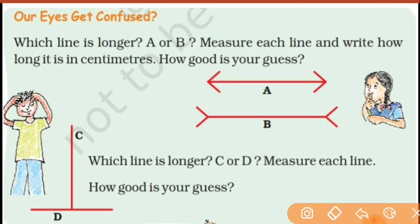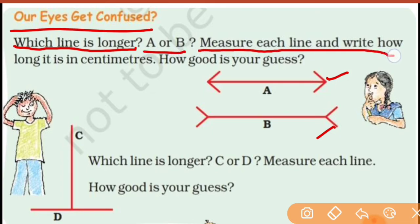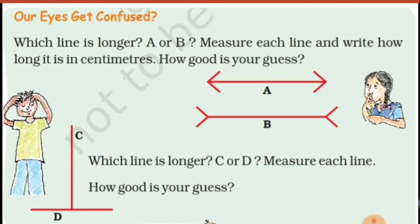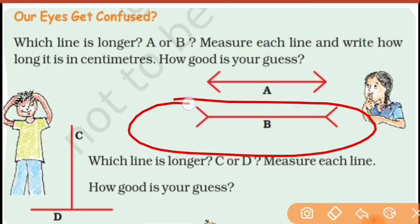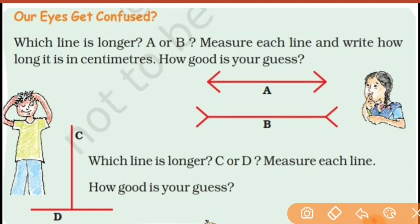This is again very interesting — our eyes get confused. Which line is longer? You can see two lines: line A and line B. Measure each line and write how long it is in centimeters. First you will guess. A line has two end points. In line A, the end points are here — first end point and last end point. In line B also you can see the first and second end points. You might feel that line B is longer, but that is not the case — we have to look at the end points. Both end points are the same.